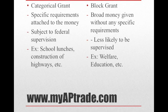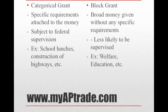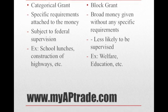One of the federal government's most important tools for influencing policy at the state and local levels is the federal grant. There are two types of grants: categorical and block. Categorical grants are specific grants with many strings attached, given for specific purposes and subject to federal supervision — examples include school lunches, building of highways, and airports. Block grants are broad grants to states for prescribed activities with very few strings attached, such as child care, welfare, and education.